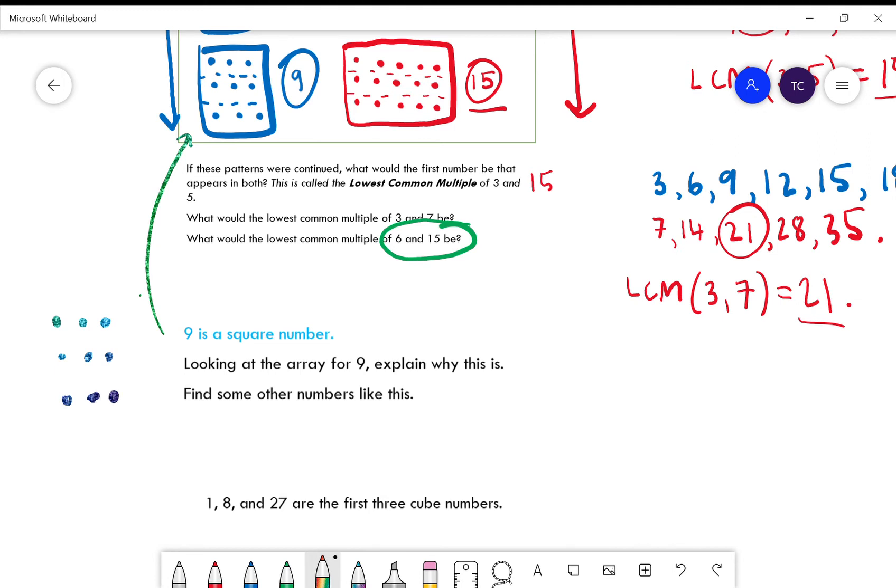But first of all, I'd like to think about what it is that makes a square a square, rather than your usual type of rectangle. A square is just a type of rectangle, but anyway, you've got the same number of rows as you do columns.